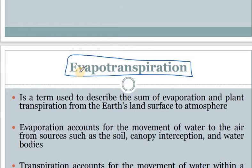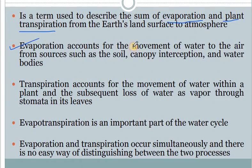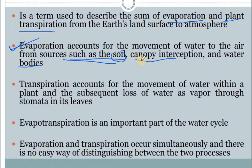Evapotranspiration involves both processes — evaporation and transpiration. It is a term used to describe the sum of evaporation and plant transpiration. Evaporation happens from lakes and water bodies, while transpiration happens from plants, and together they are called evapotranspiration. Evaporation accounts for the movement of water to the air from sources such as soil, canopy interception, and water bodies.